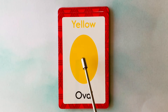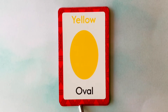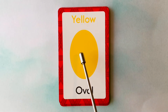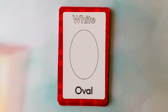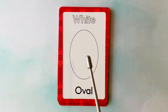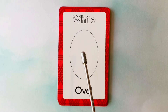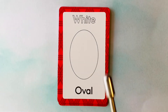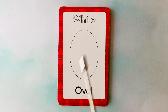This is an oval. What color is this oval? It's a yellow oval. This is a yellow oval. This is also an oval. What color is this oval? It's a white oval. This is a white oval.